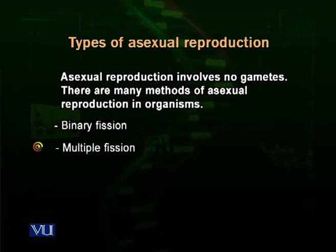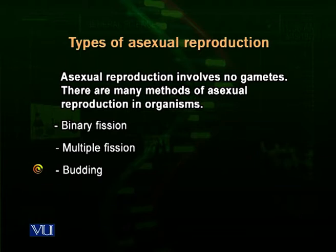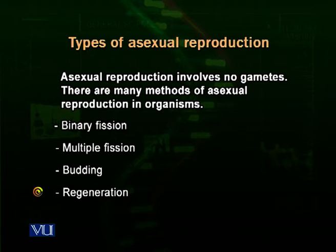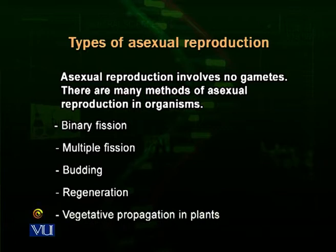Multiple fission is also a common method of asexual reproduction in unicellular organisms. Budding is another important method of asexual reproduction and it takes place in unicellular and even in many multicellular organisms. Then there is regeneration, which is not an exact method of asexual reproduction but sometimes serves for it — it is the revival of a lost part of an organism, like an arm in a starfish. Vegetative propagation in plants is where vegetative parts grow into newer plants.